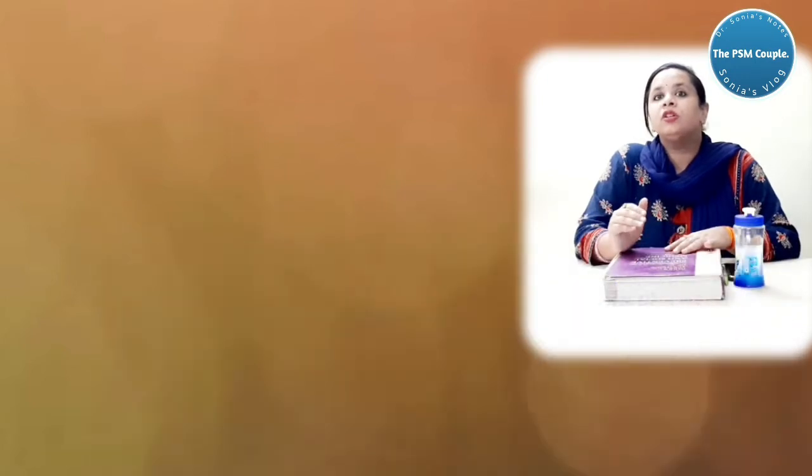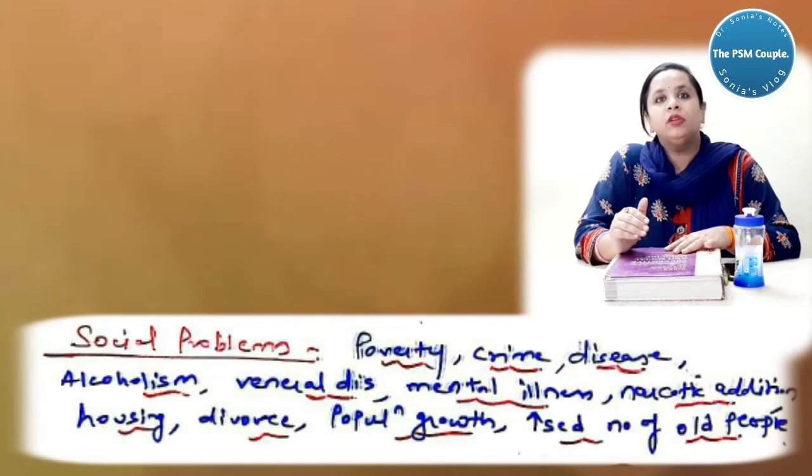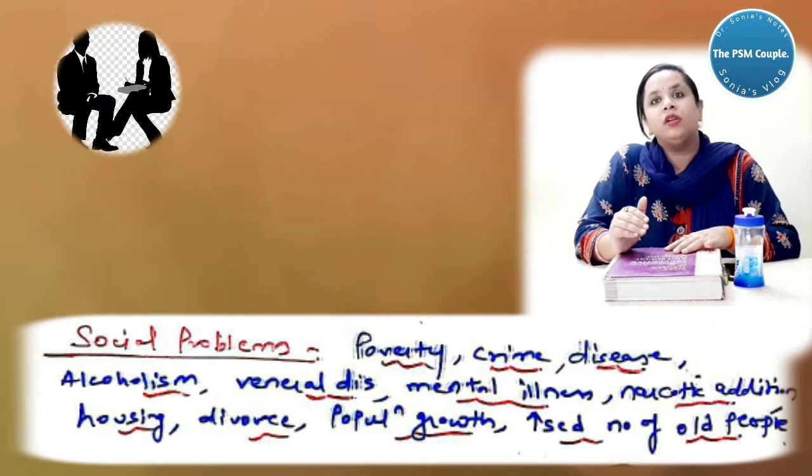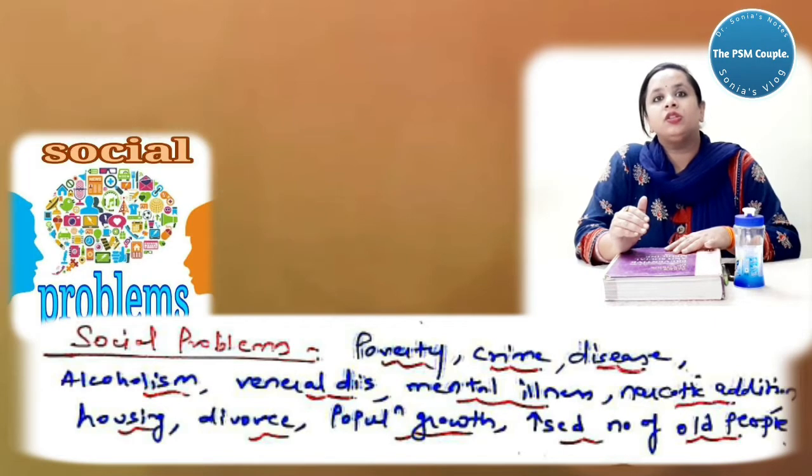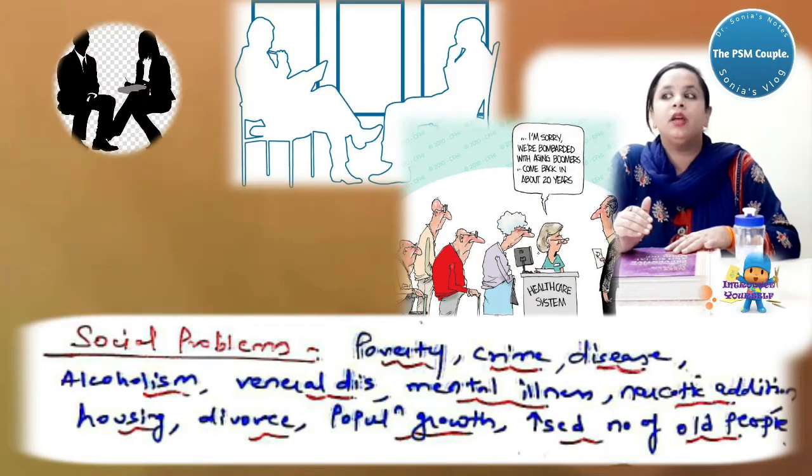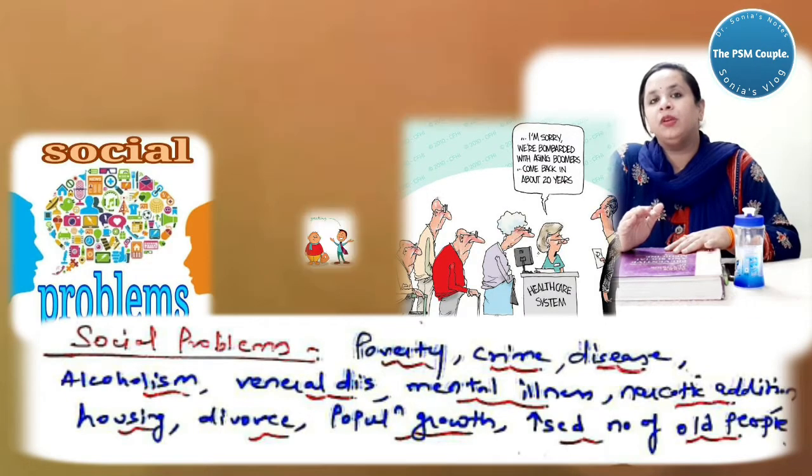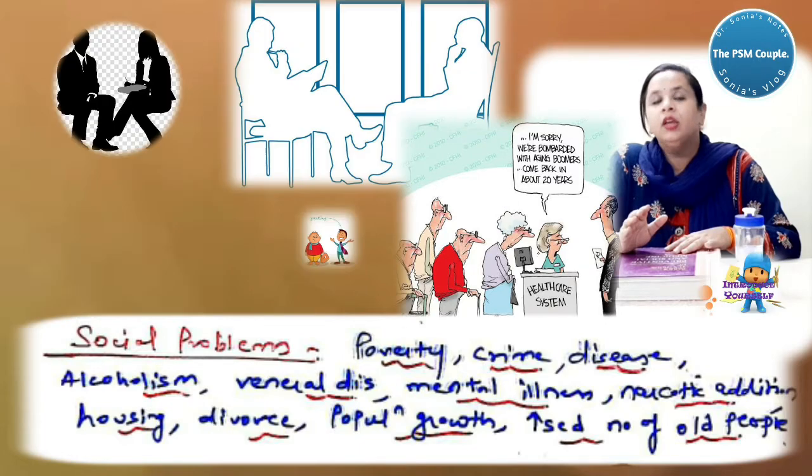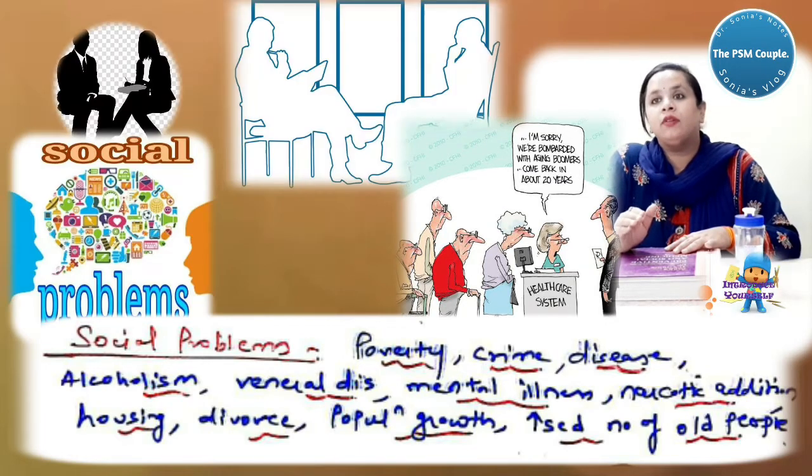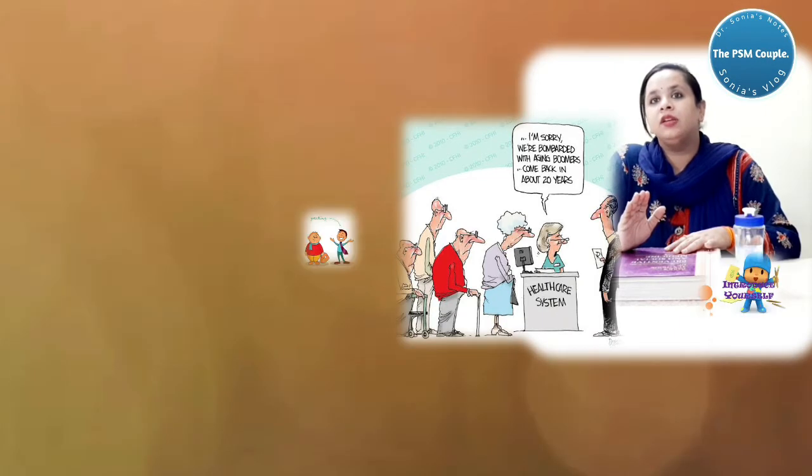Now this is the enumeration of various social problems in India. They are poverty, crime, disease, alcoholism, mental illness, narcotic addiction, housing, divorce, population growth and increase in the number of old people. That is your geriatric problems. This is very important. These are the social problems in your country. They are often asked in your exams.